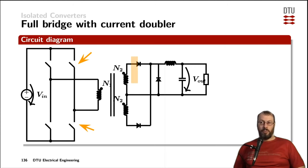Once more, this diagram is showing the secondary side as a current doubler, but you could also apply a voltage doubler, a full-bridge rectifier, or a half-bridge rectifier here, and that would have an influence on the resulting DC transfer function.